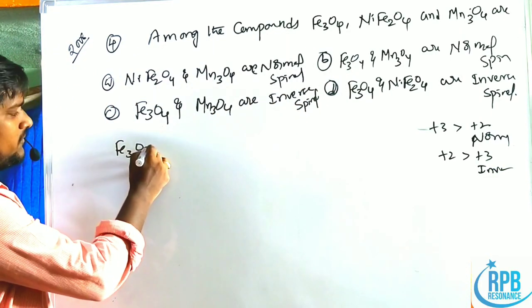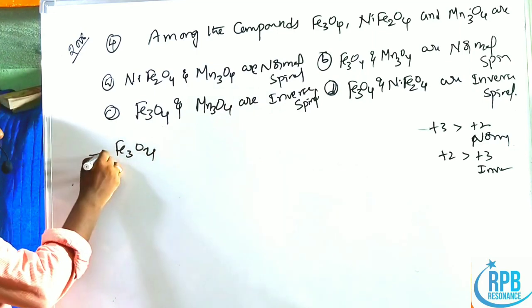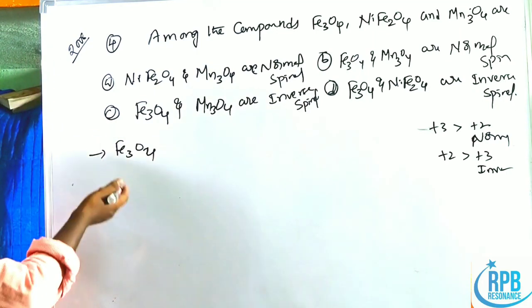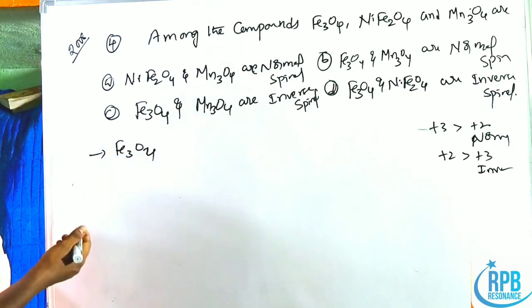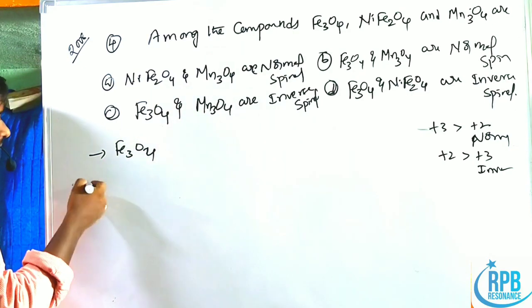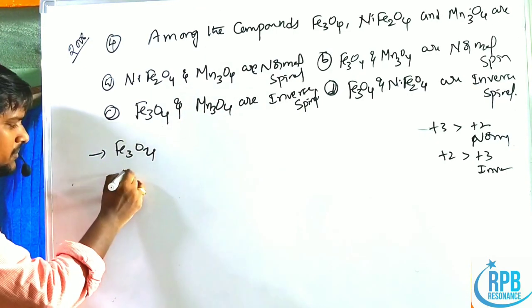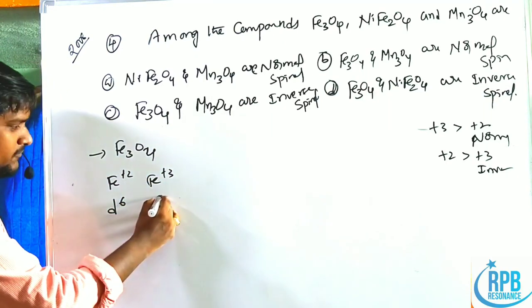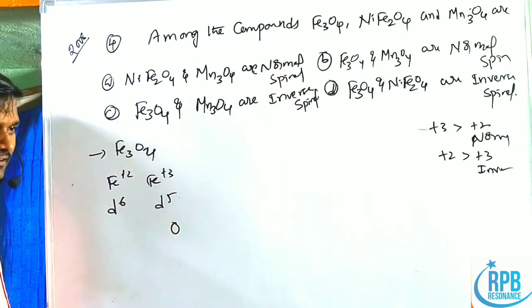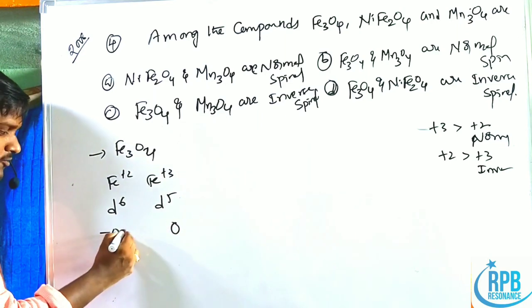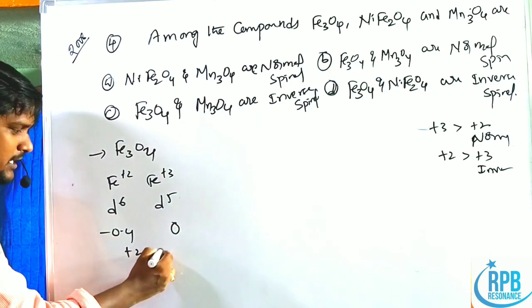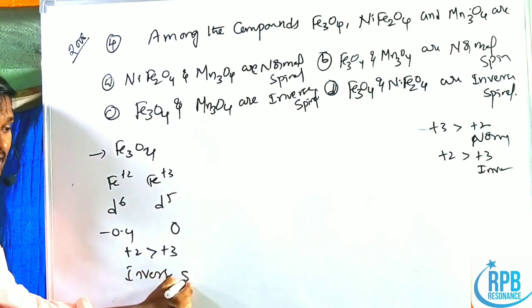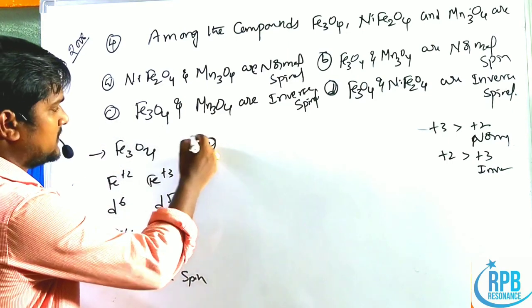Fe₃O₄ contains Fe²⁺ and Fe³⁺. Fe²⁺ is d⁶ (CFSE = −0.4 ΔO); Fe³⁺ is d⁵ (CFSE = 0). Since A²⁺ CFSE (−0.4 ΔO) > B³⁺ CFSE (0), Fe₃O₄ is an inverse spinal.